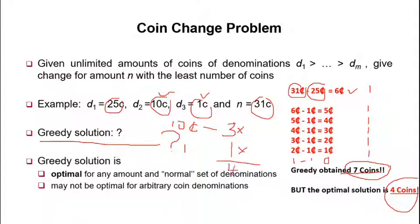In fact, only four coins is the optimal solution — using three 10-cent coins and one 1-cent coin. So the greedy solution here is not optimal. For any amount and a normal set of denominations, greedy may not produce the optimal solution. This is one of the main issues with the greedy design technique.